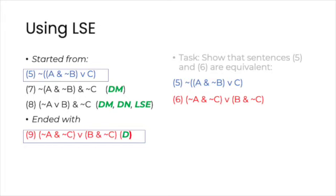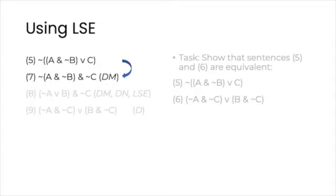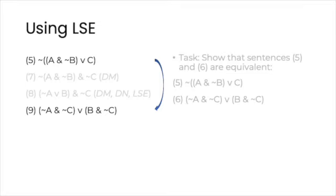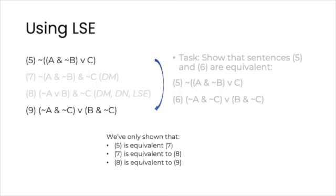However, if we look at things more closely, you'll see that there still remains a problem. We showed that 7 and 5 are equivalent, by means of DeMorgans. Then we showed the same about 7 and 8, this time using DeMorgans and double negation, enabled by LSE. Finally, we distributed our way into showing the equivalence of 8 and 9. However, our task was to show that 5 and 9 were equivalent. So taking stock of our achievements, we have only shown that 5 is equivalent to 7, 7 is equivalent to 8, 8 is equivalent to 9. What we haven't done yet is to show that 5 is equivalent to 9.